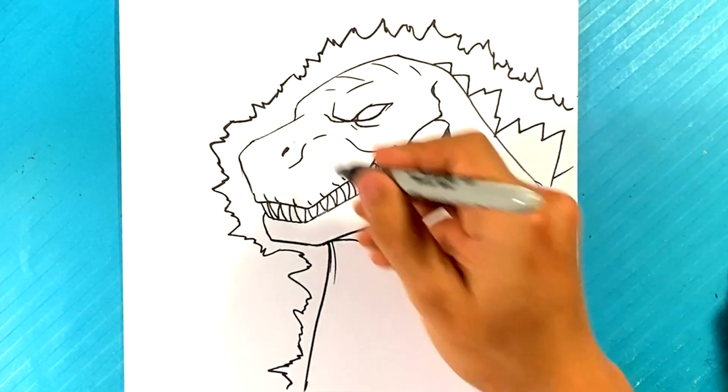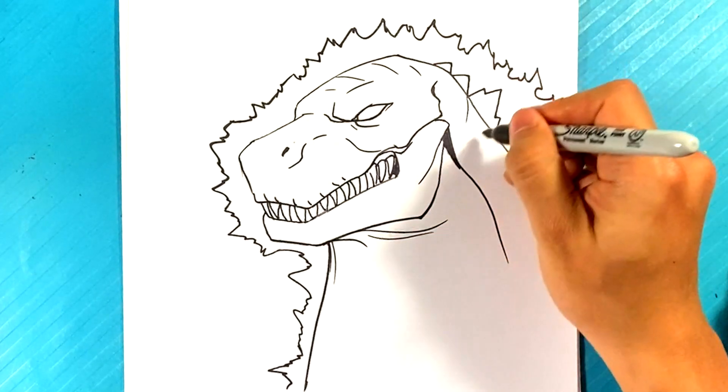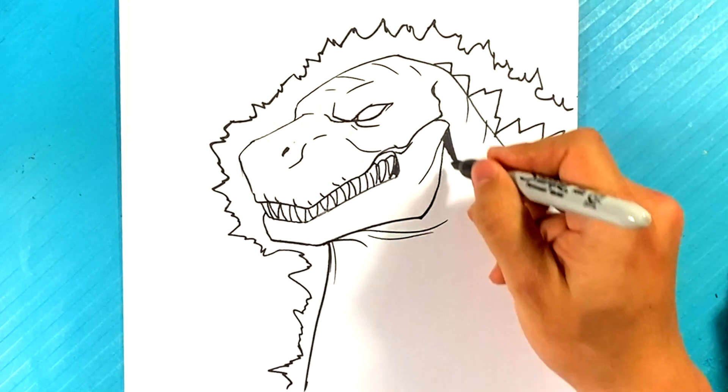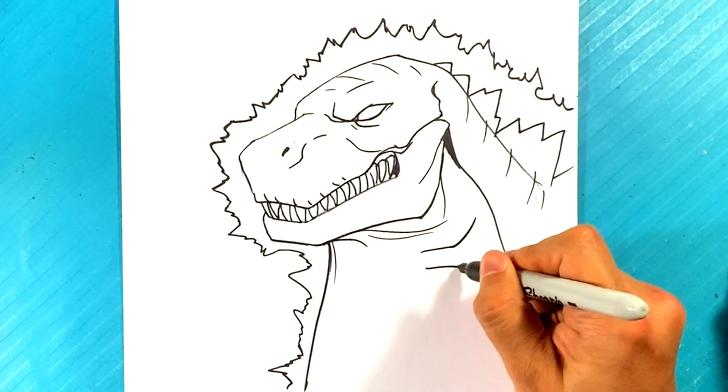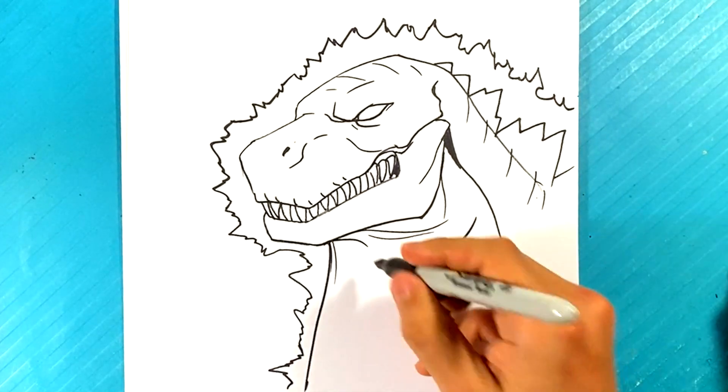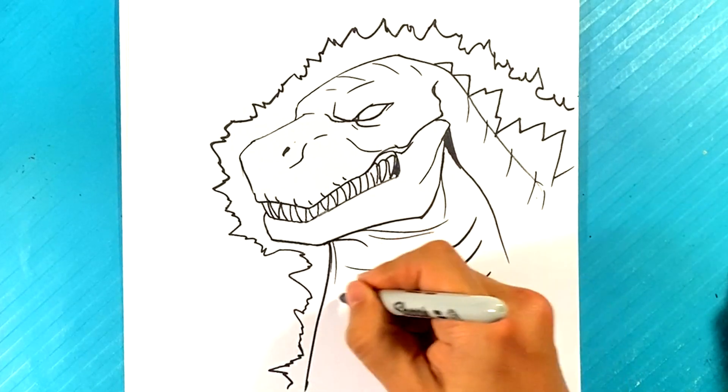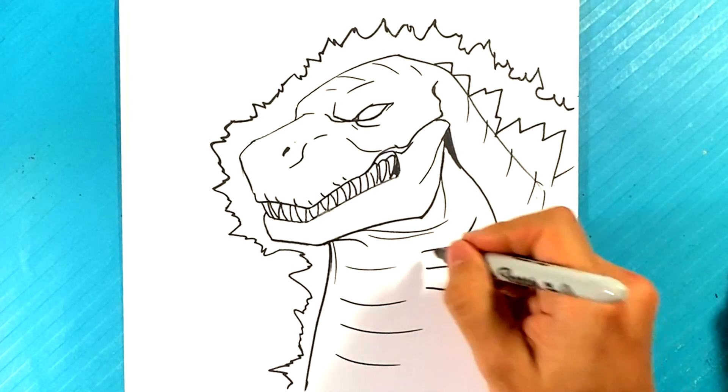A couple of little lines in the front there, a couple of lines in the back. He's got these gills over here on his neck, and if you want, you can draw thin lines. Other than that, he's got that snake belly kind of look to him.